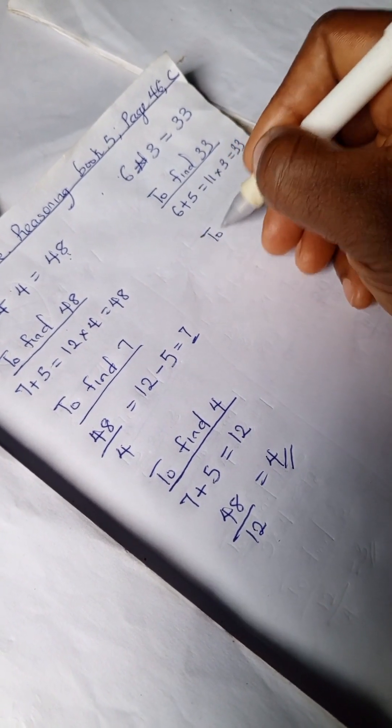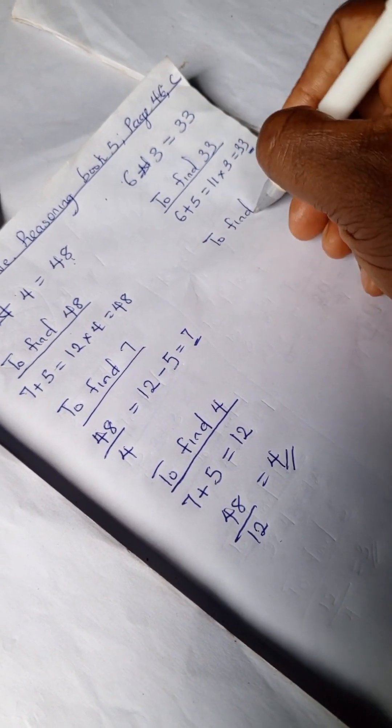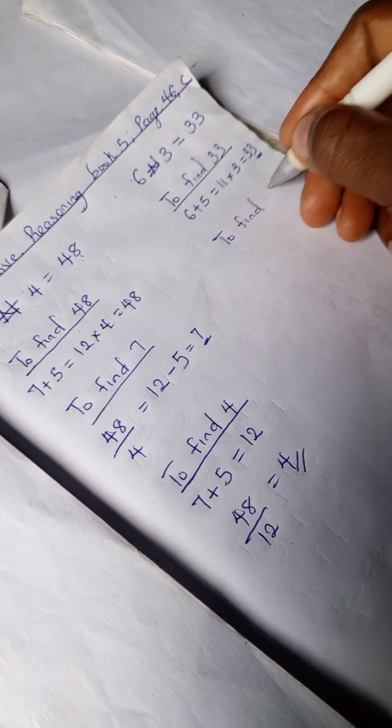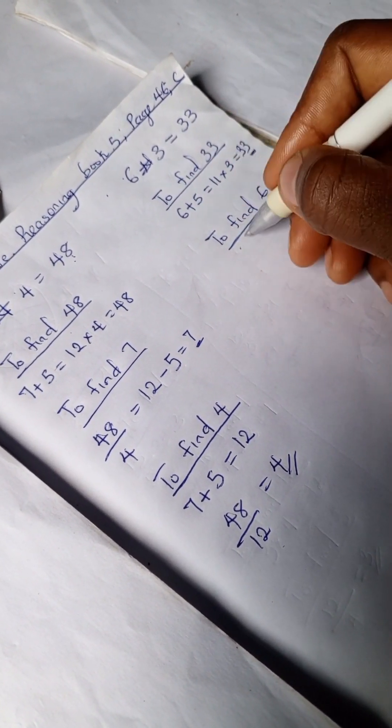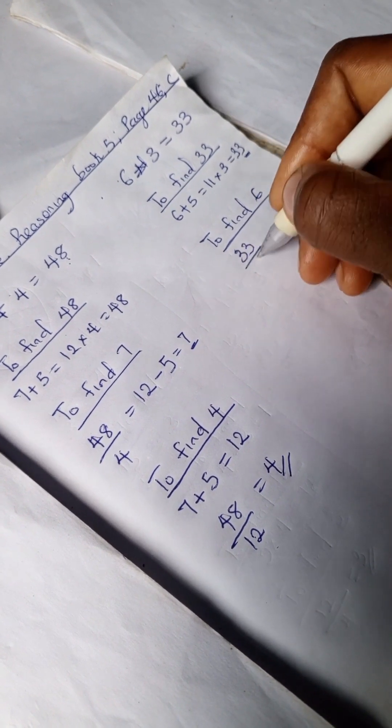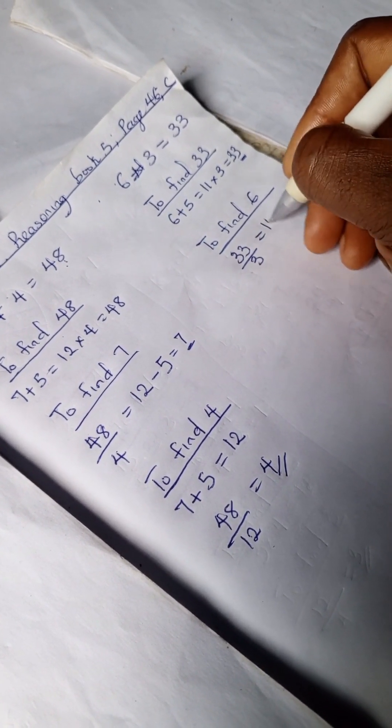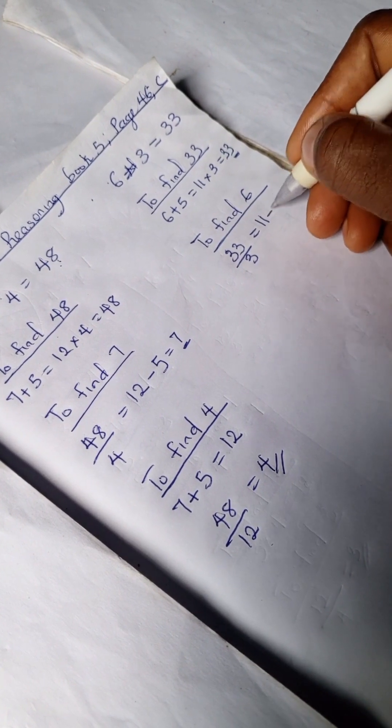We have 33 ÷ 3 = 11, then 11 - 5 (our secret number) = 6.